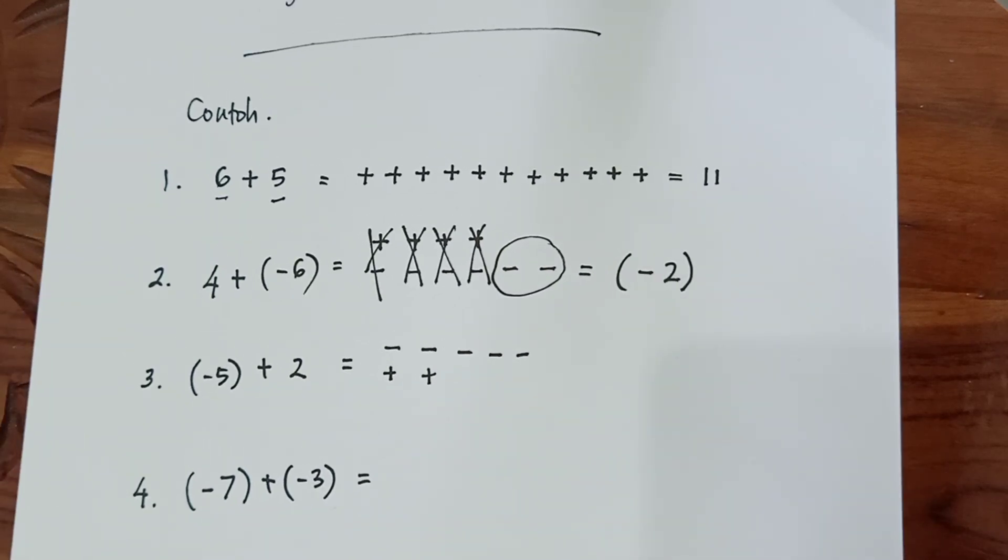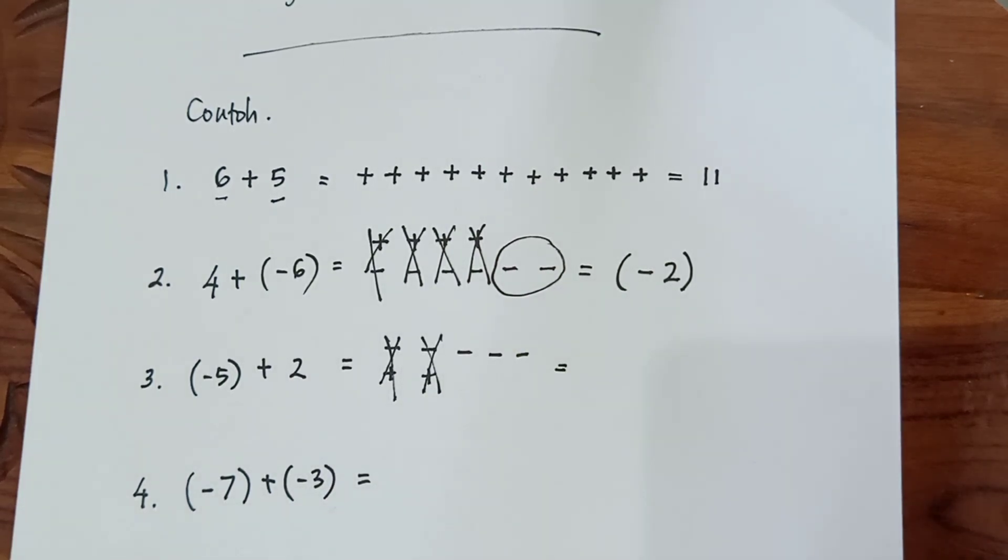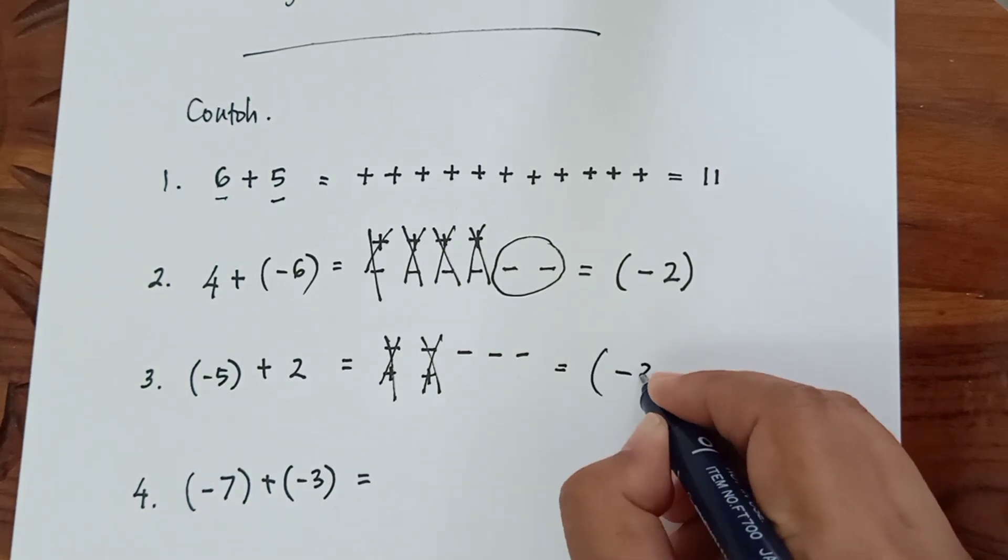Untuk angka yang memiliki pasangan, jangan lupa untuk dicoret. Maka hasilnya adalah negatif 3.